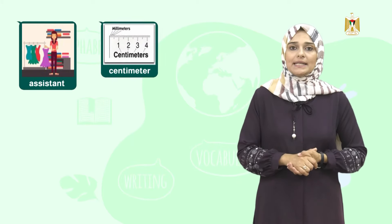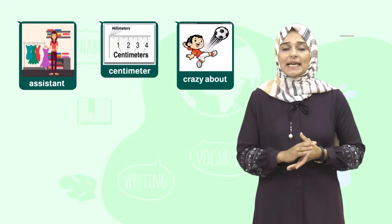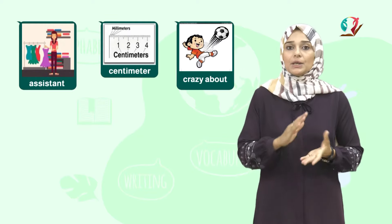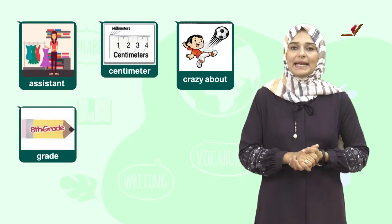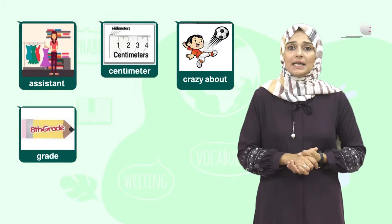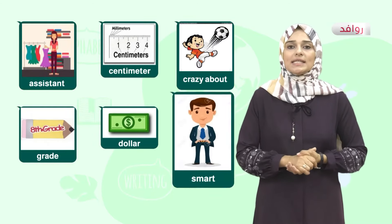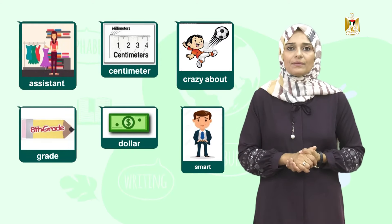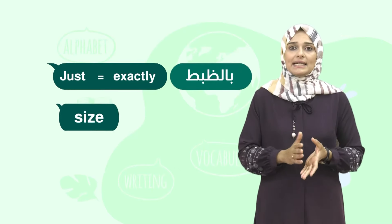Now, let's learn their meanings together. The first picture shows an assistant. Assistant تعني بائع. Next word, centimeter — centimeter تعني سنتيمتر. This boy is crazy about football — crazy about بمعنى مولع بـ. You are in grade 8 — grade تعني صف. This is a dollar — dollar تعني دولار. This man looks smart — smart تعني أنيق. Just means exactly — تعني بالضبط. Size — تعني مقاس.